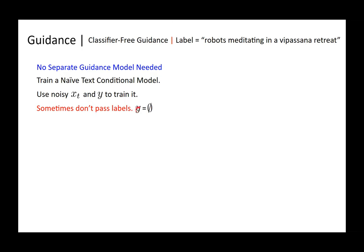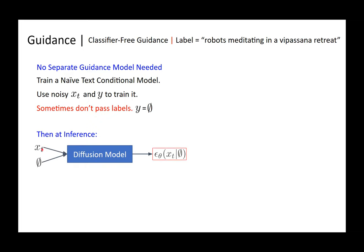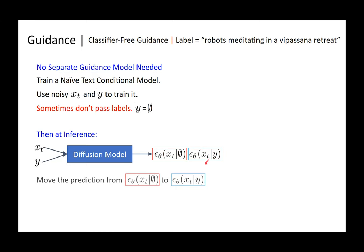Sometimes you pass the label and sometimes you don't, so your diffusion model learns to generate images both with y and without y. At inference time, you generate one mean using the noisy image with a null text, and repeat using the label y. Now you have two distributions — one without text and one with text.